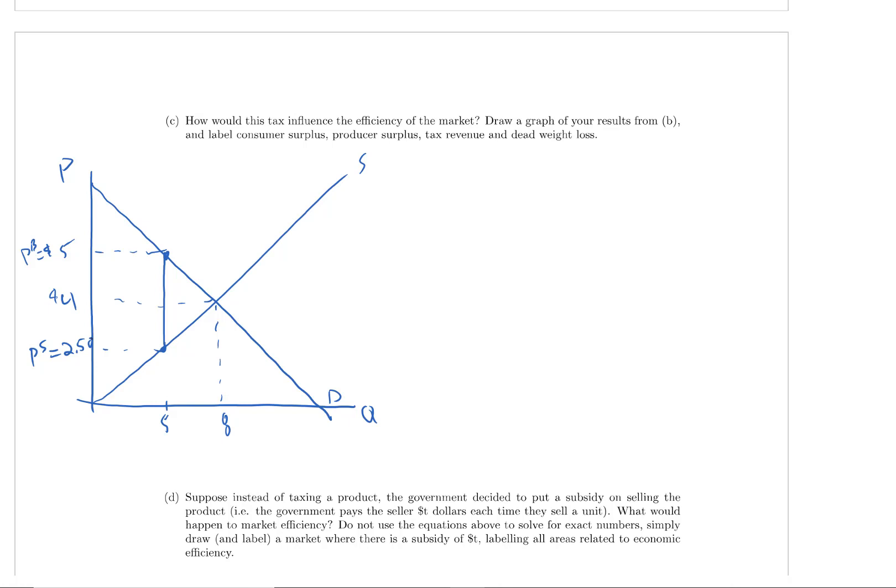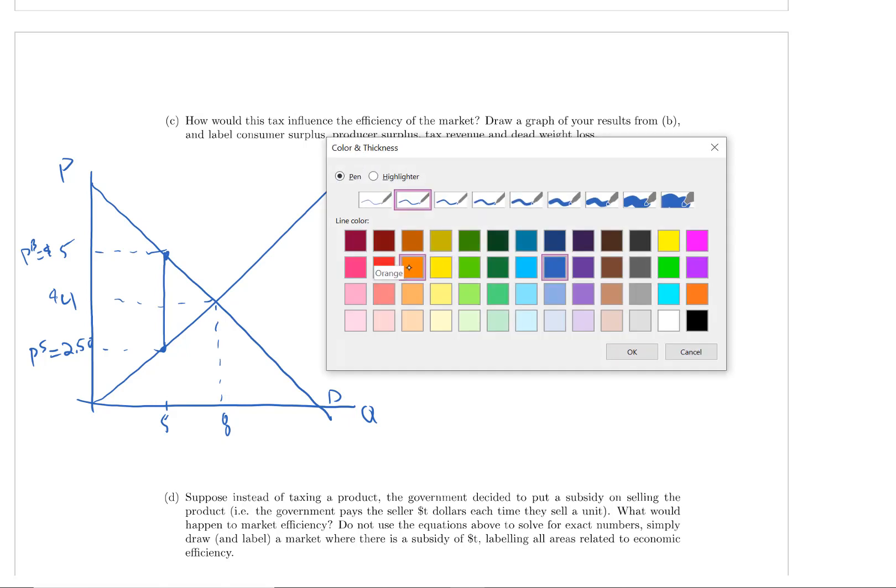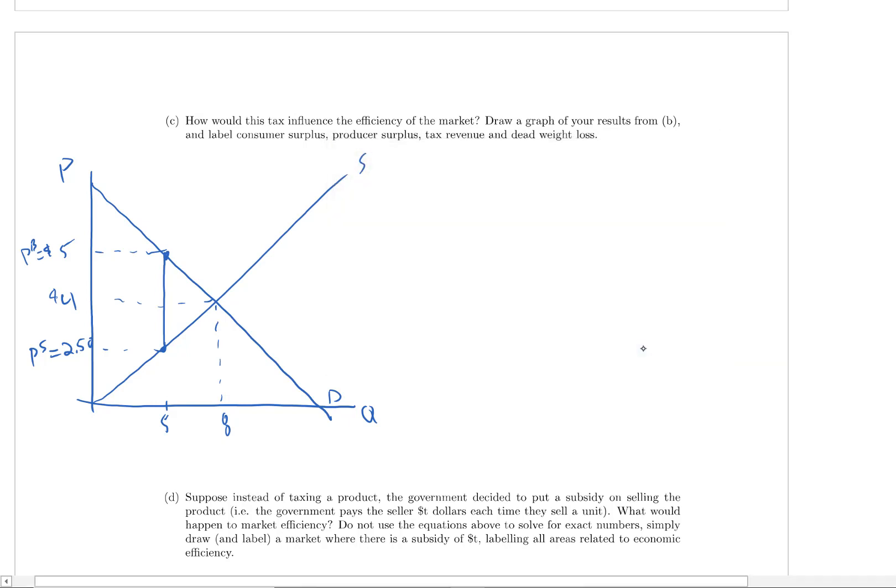All right. So consumer surplus. So let's choose a color here. Let's choose orange, for instance. So remember, consumer surplus, everything below the demand curve, above the price that the consumers pay. And it can only count up to the quantity that we actually exchange. So here's the demand curve. This is the price that consumers pay. PB is the price they pay now. And so this area up here is going to be consumer surplus.